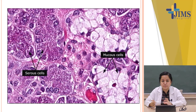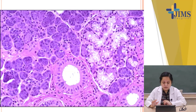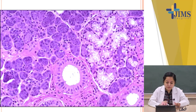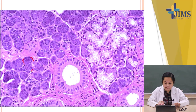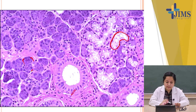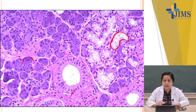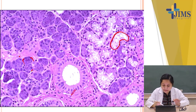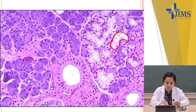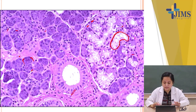In a better photograph, you can clearly see serous acini, a duct, and mucinous acini. The difference between serous and mucous is appreciable, and around the acini you can see flattened myoepithelial cells.